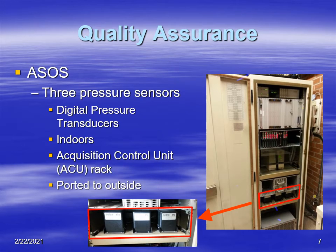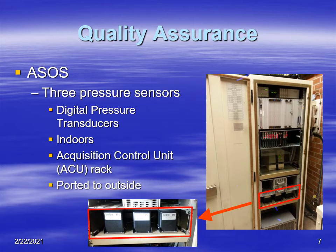The next topic we'll consider is quality assurance. Measurements of atmospheric pressure at the surface are made by automated surface observing systems, or what we call the ASOS. The ASOS has three pressure sensors, which provides backup and redundancy. They are digital pressure transducers — specifically, the CETRA 470 pressure transducers. They're located indoors in the acquisition control unit rack, as shown in the picture highlighted in red, and you can see that they're located side by side. Each one of those is connected to the same static line, so they're all measuring the same static pressure.